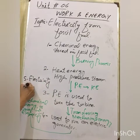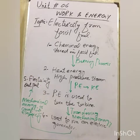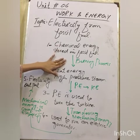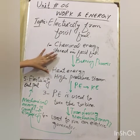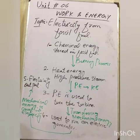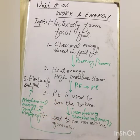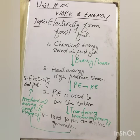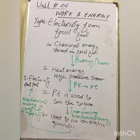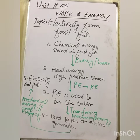Electricity is produced as the output. The turbine is turned by steam, transferring mechanical energy to the electric generator, which converts it into electricity as output. This is the process of making electricity from fossil fuels.